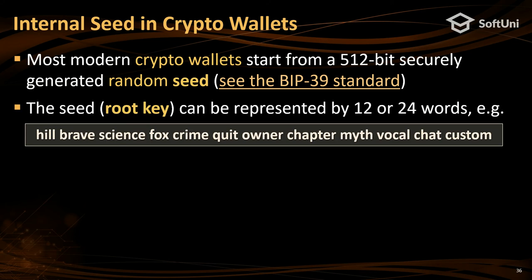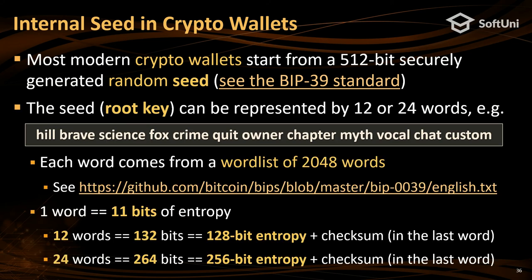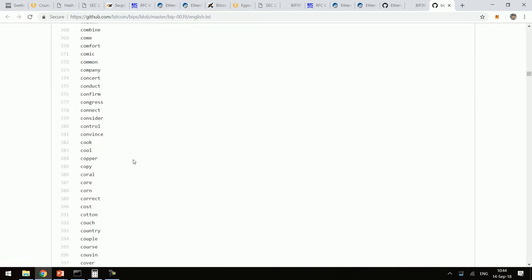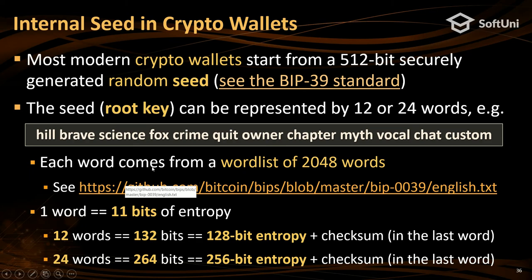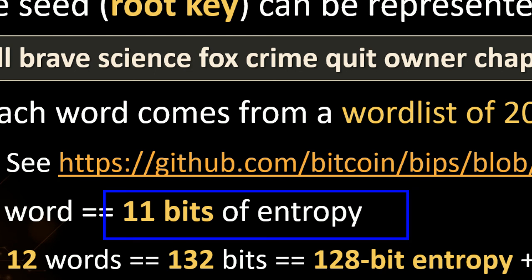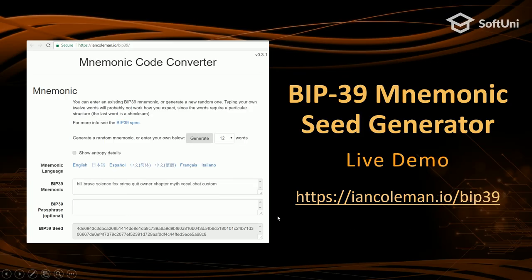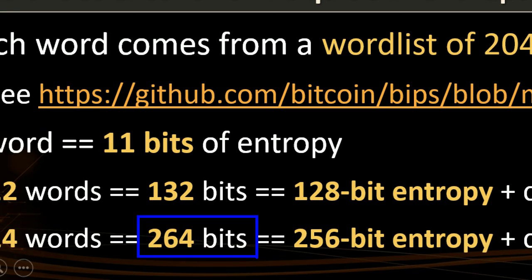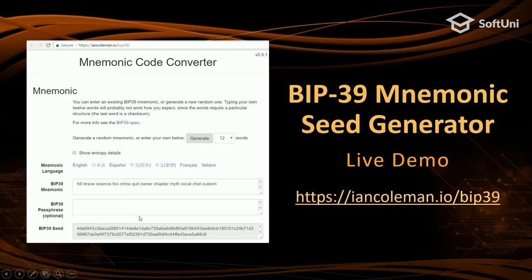Modern wallets use these seed words. Each word is 11 bits of entropy from a 2048-word dictionary. Twenty-four words gives you a key length of 264 bits — the secret in your wallet from which all keys are hierarchically derived. The last thing I want to show is AES. Many people believe AES encryption is just: give me a password, give me a message, and it produces something. It's far more complex.